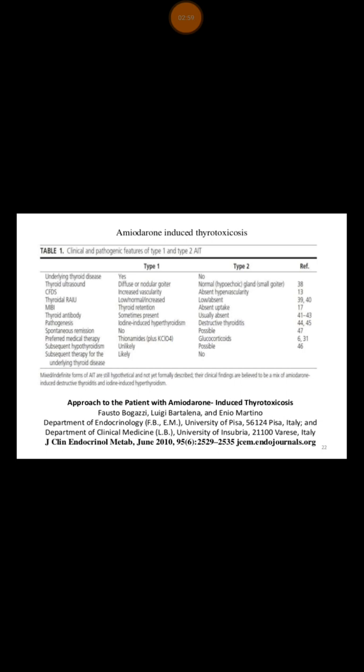In Type 1, the condition can spontaneously go into remission, so treatment is to start the patient on antithyroid drugs to treat the underlying thyrotoxicosis until spontaneous remission occurs. In Type 2, because it is destructive thyroiditis, the only way to treat it is by giving the patient glucocorticoids in higher doses to suppress the thyroiditis process.